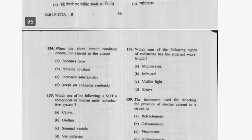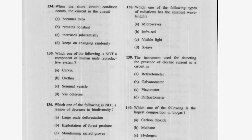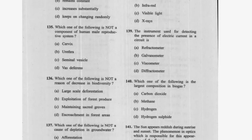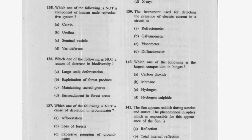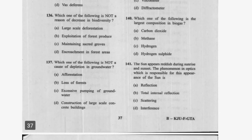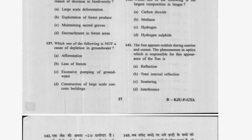Question 124: When a short circuit condition occurs, the current in the circuit increases substantially — option C is correct. Question 125: Which is not a component of the human male reproductive system? Cervix — option A. Question 126: Which is not a reason for decrease in biodiversity? Option C is correct. Question 127: Which is not a cause of depletion in groundwater? Afforestation — option A is correct.